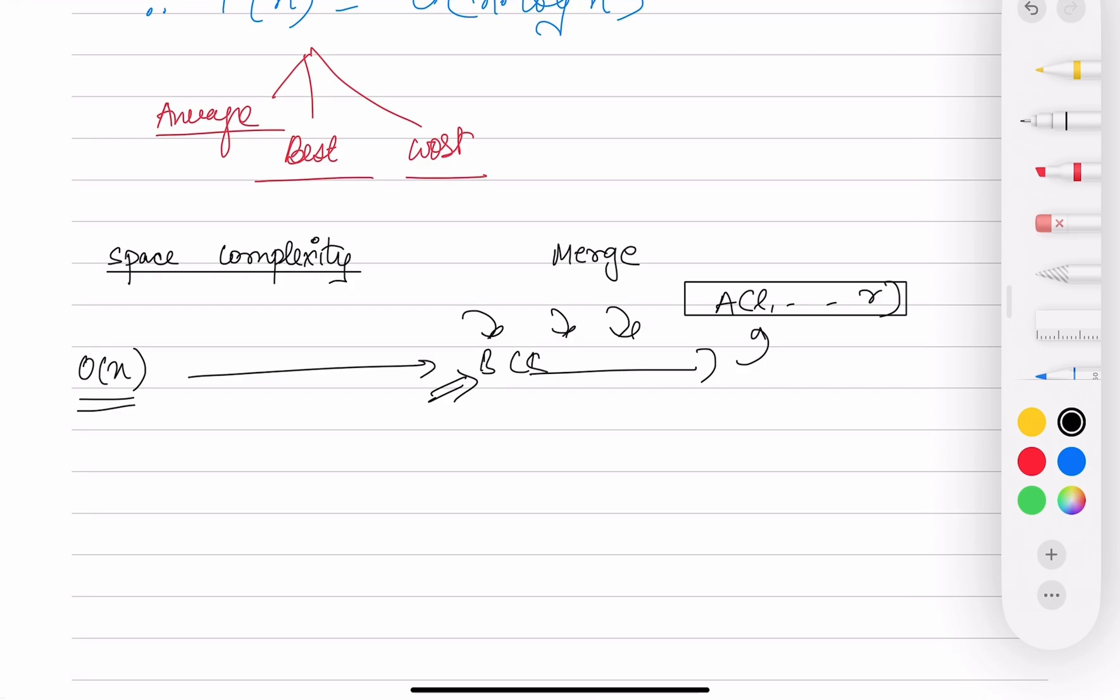For this, because we need to store the temporary array where we store - remember we compare A[i] and A[j]. If A[i] is less than, then what we do is copy A[i] to B[k] and increment i and increment k. In case A[j] is less, we copy A[j] in B[k] and increment j and increment k. So B[k] is a temporary array needed, that is O(n) of extra space is needed to copy the array.